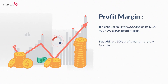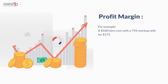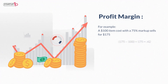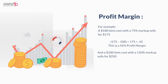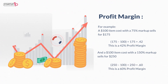Selling price minus cost, divided by selling price, gives you profit margin. For example, a $100 item cost with a 75% markup sells for $175 — this gives you a 42% profit margin. In the same way, a $100 item cost with a 150% markup sells for $250 — this gives you a 60% profit margin.